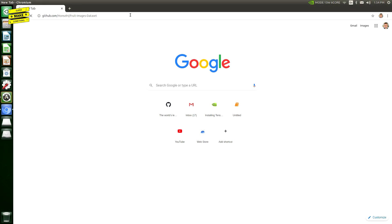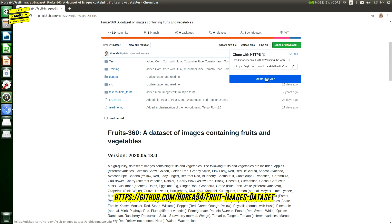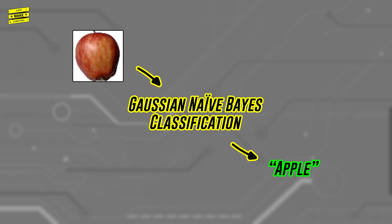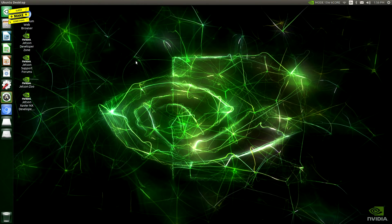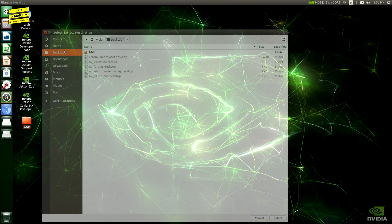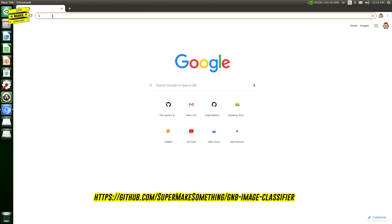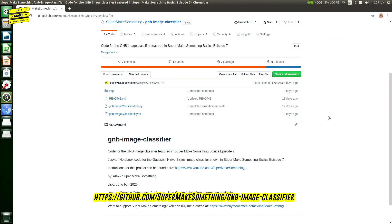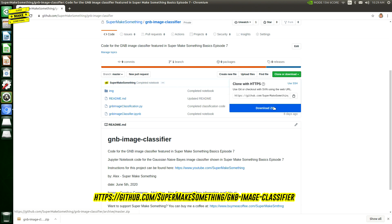Once everything was installed, I headed to GitHub and downloaded the Fruits 360 image dataset, a collection of over 90,000 100x100 pixel images of different types of fruits, vegetables, and nuts, which we will use to develop a probabilistic image classifier using a Gaussian Naive Bayes classification scheme. I next created a folder on my desktop, unzipped the Fruits 360 dataset into it, and finally downloaded the GNB image classifier Jupyter Notebook from the Super Make Something GitHub page. A link to all of these files can be found in the video description below.